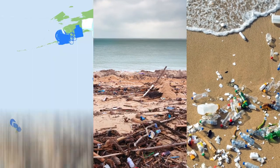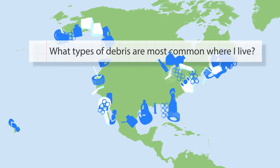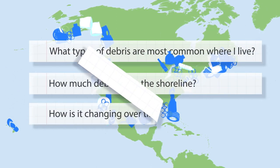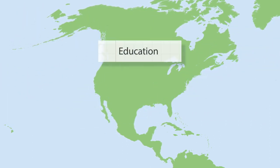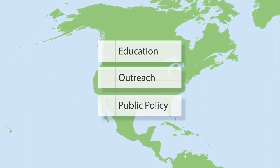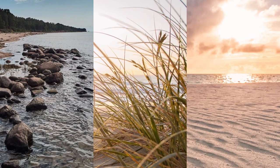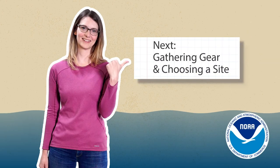Then anyone can use it to ask questions like: What types of debris are most common where I live? How much debris is on the shoreline? How is it changing over time? Understanding the answers to these questions can guide education, outreach, and other prevention measures like public policy. It's the first step to keeping our beaches and water clean. And everyone likes clean beaches and water, right? So let's get going. In the next video, we'll see Hillary choose where she's going to survey.